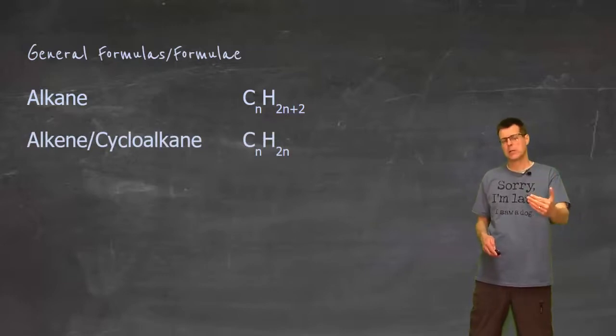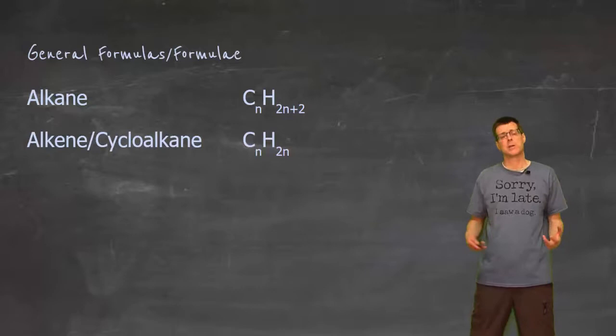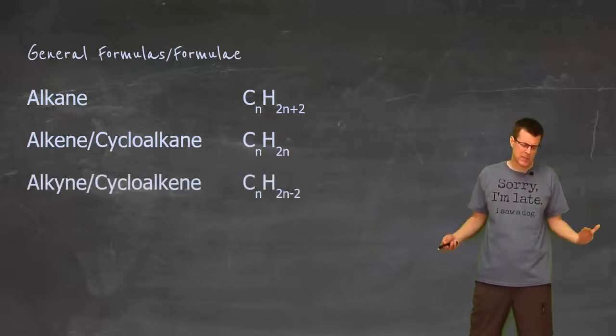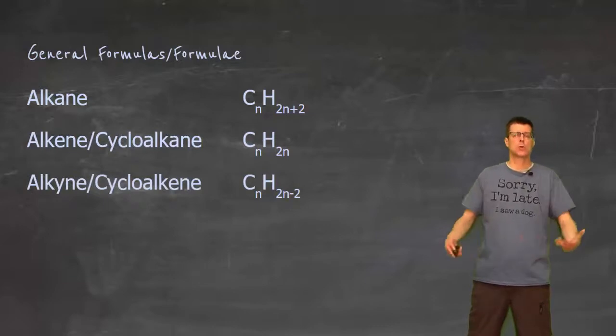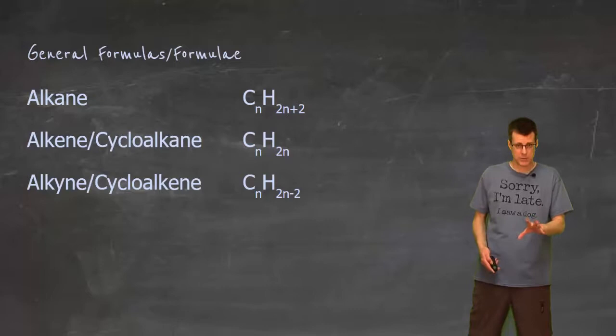If I have an alkene or cycloalkane, well, in the previous picture, we took two hydrogens away, so now for the number of carbons that I have, I've got twice as many hydrogens. With an alkyne or a cycloalkene, I took away two more hydrogens, so I'm at twice as many hydrogens minus two. So if you think of the alkyne that was there, the triple bond, that was five carbons and eight hydrogens.